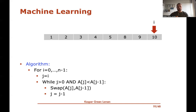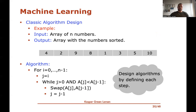So this is a classic algorithm, and you've probably seen it before. It's very simple — you just move from left to right in the array, each time moving each element to its correct position by swapping it with the previous element if it's smaller. Basically, what you do in classic algorithm design is sit down and think about the steps of the algorithm, maybe prove correctness using some invariants, maybe analyze the running time. This is a classic way of designing algorithms.